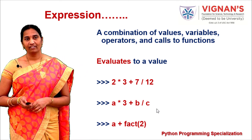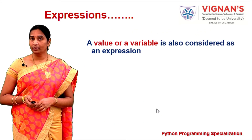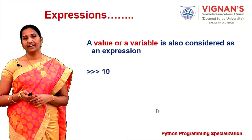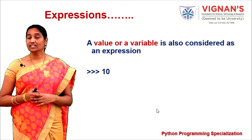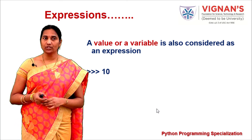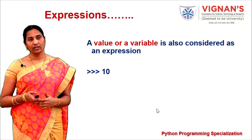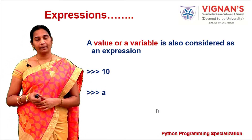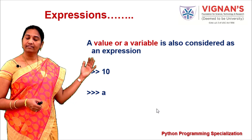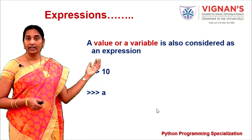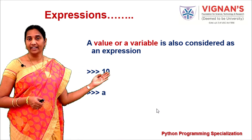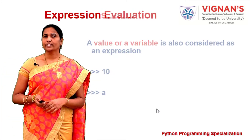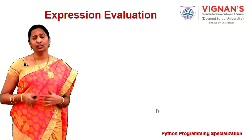Expressions in Python are combinations of values, variables, operators, and function calls that evaluate to a single value. Expressions need not be complex — they can simply be a value or a variable. You can execute these at the Python shell: in the first case you get the constant value, in the second case the value assigned to the variable is returned.